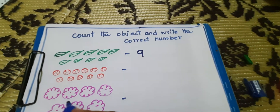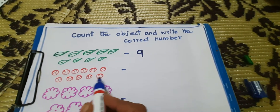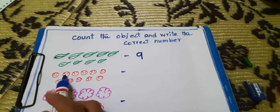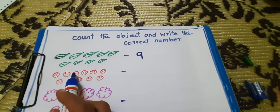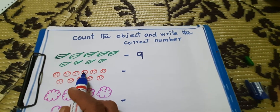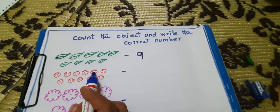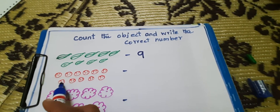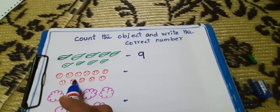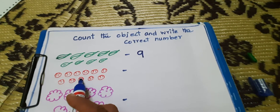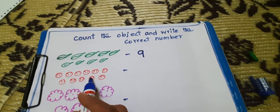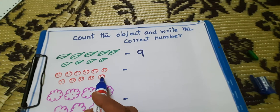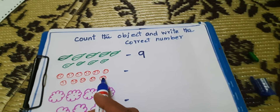How many balls are there counted? 1, 2, 3, 4, 5, 6, 7, 8, 9, 10, 11. How many balls are there? 11.